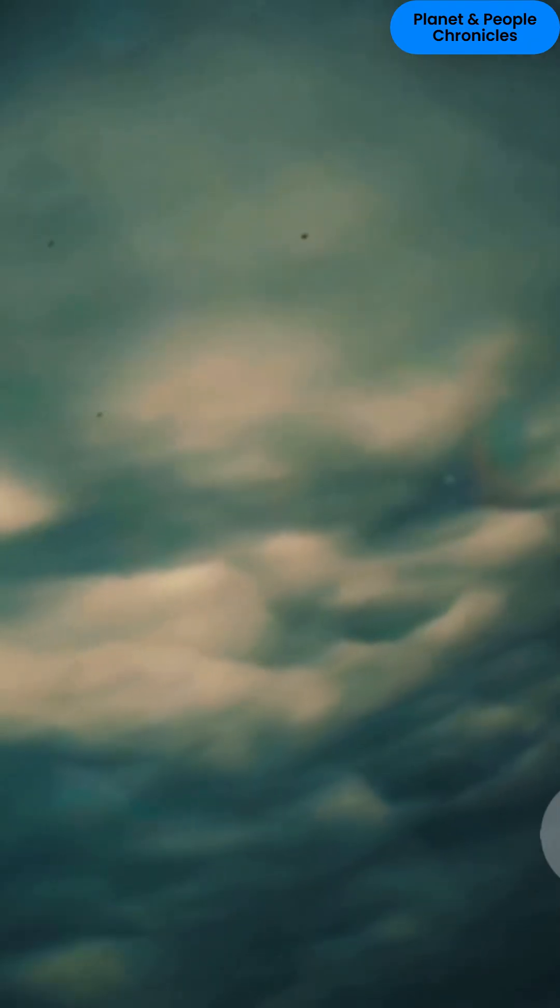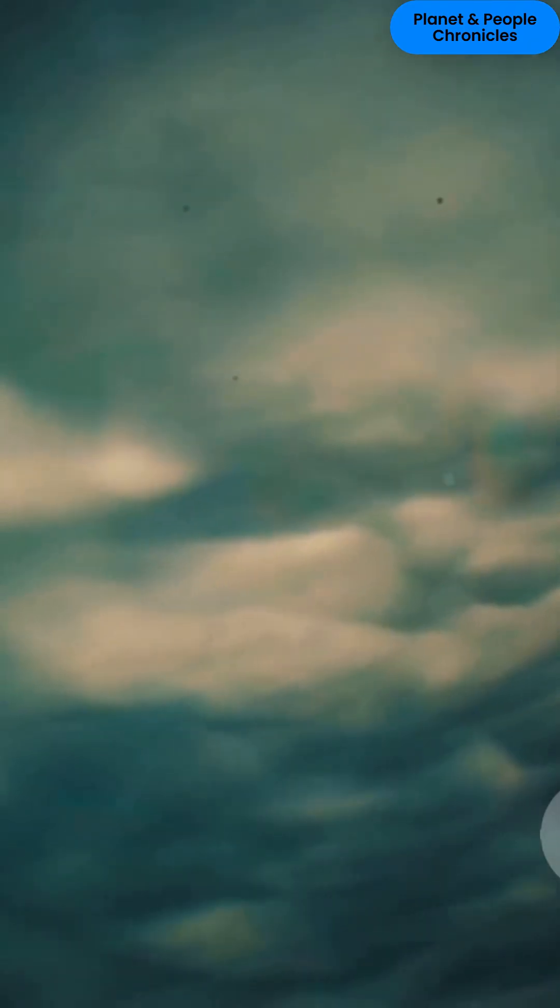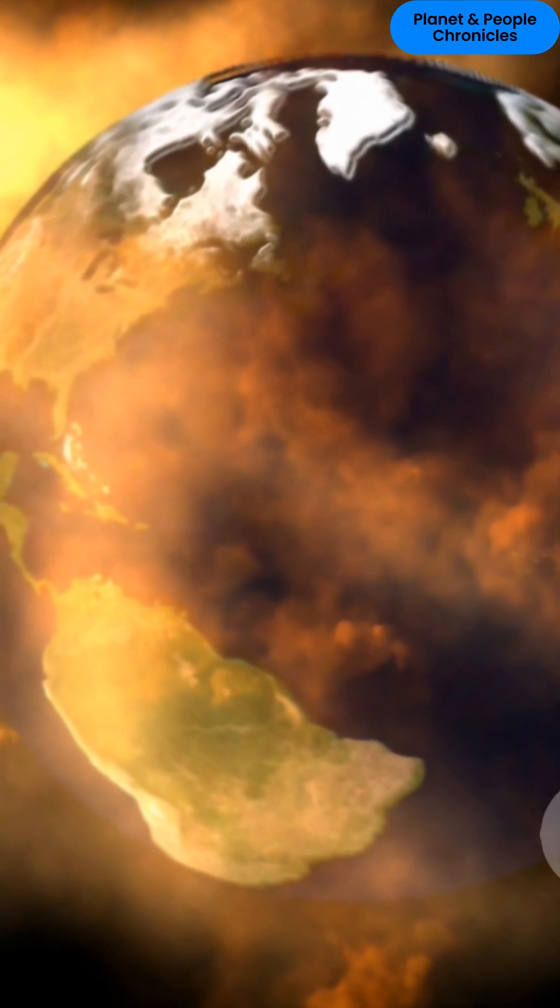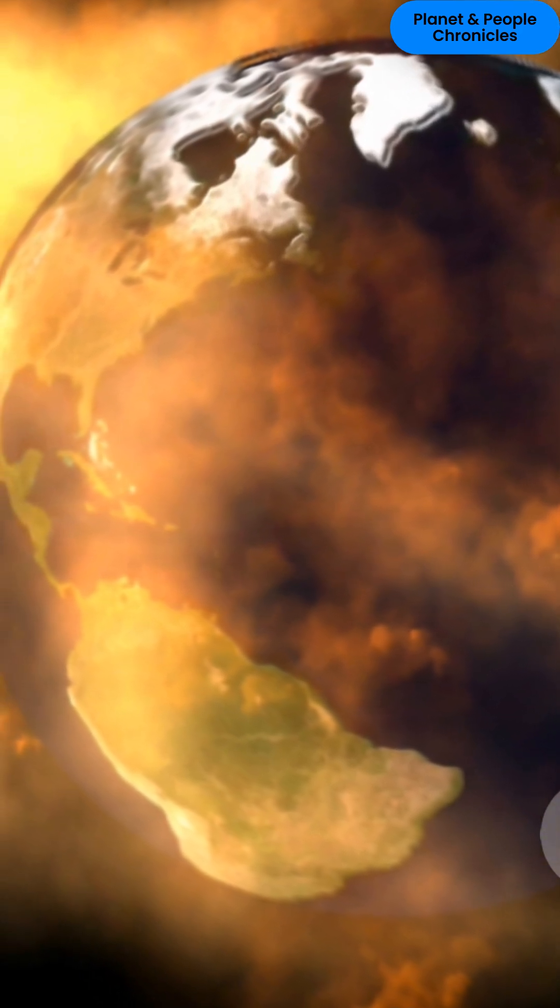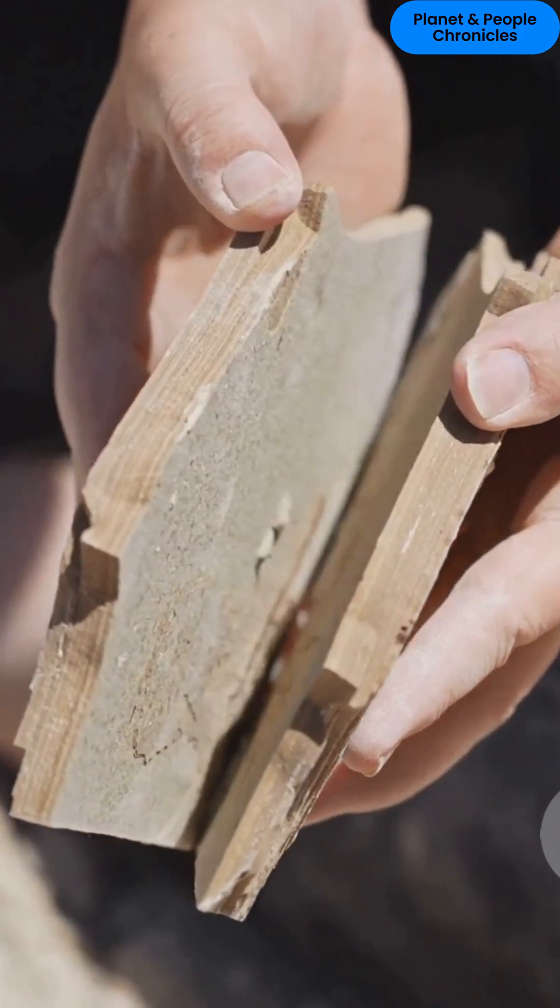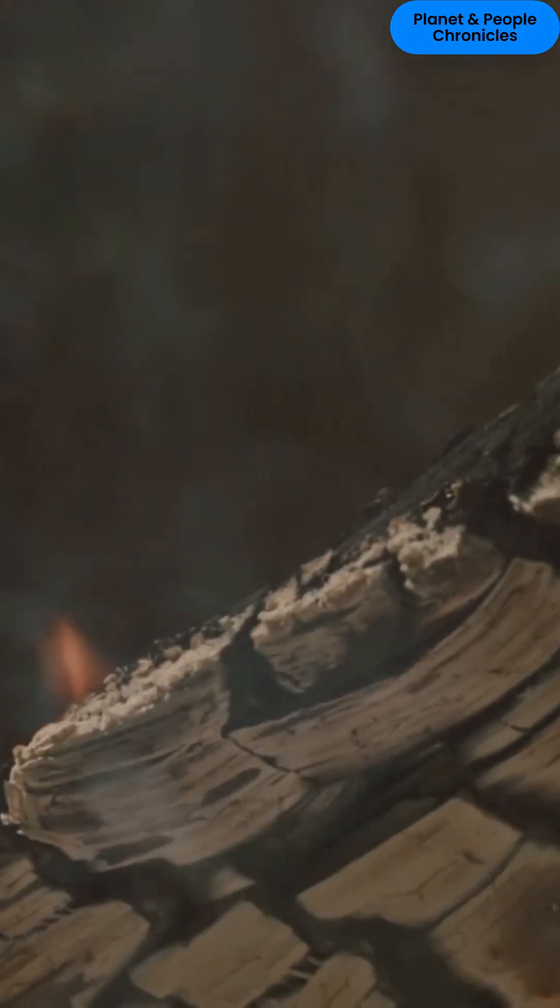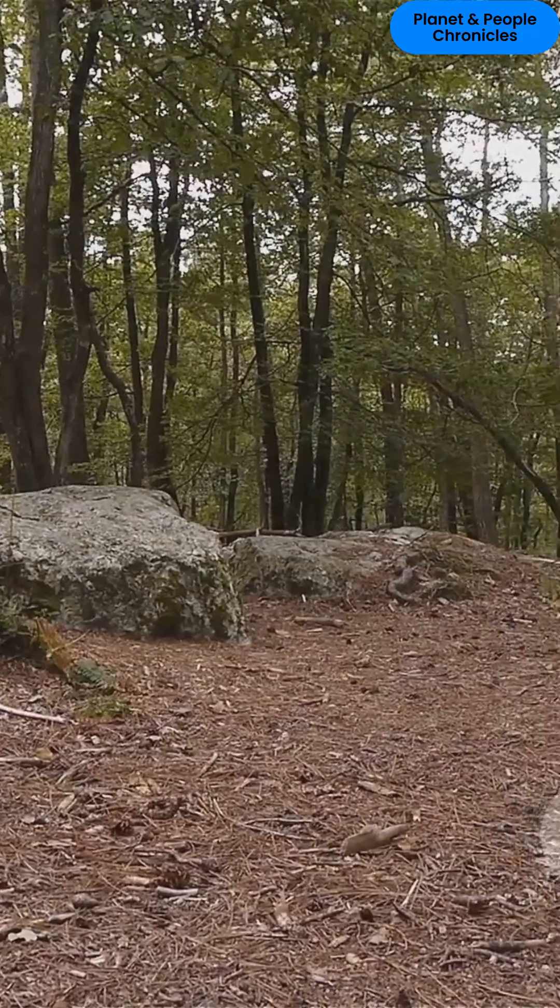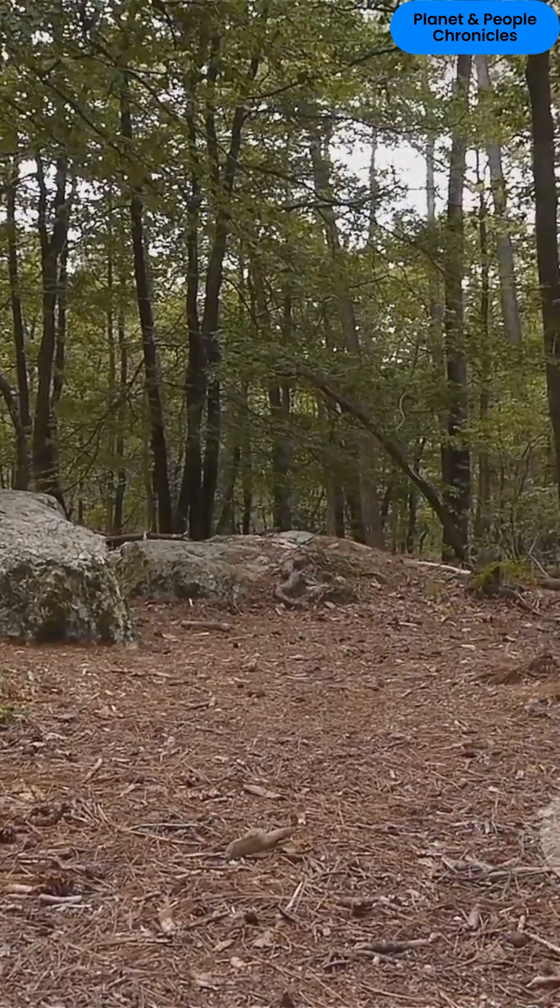When the asteroid struck near modern-day Mexico 66 million years ago, it didn't just end the age of dinosaurs. It cleared the way for mammals. And eventually, us. The fossils that survived that moment still carry the scars. Burnt layers. Shattered shells. Traces of iridium from space. They are the Earth's way of remembering impact, loss, and renewal.